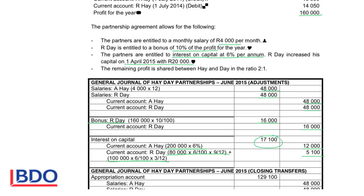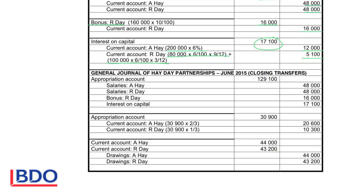The remaining profit is shared between them in the ratio 2 to 1. We take the profit of $160,000, subtract the salaries, bonus, and interest from it, and determine how much money is left over. That amount will then be taken to the current accounts of Ai Hai and Day.